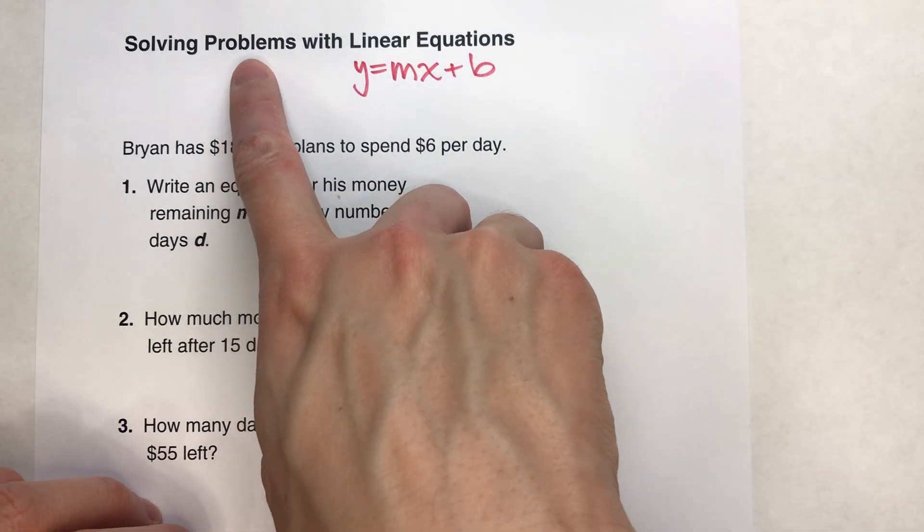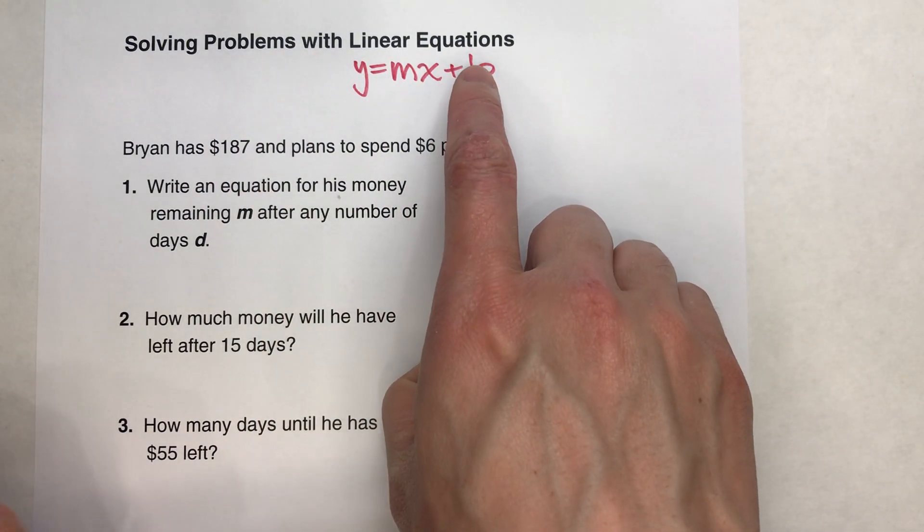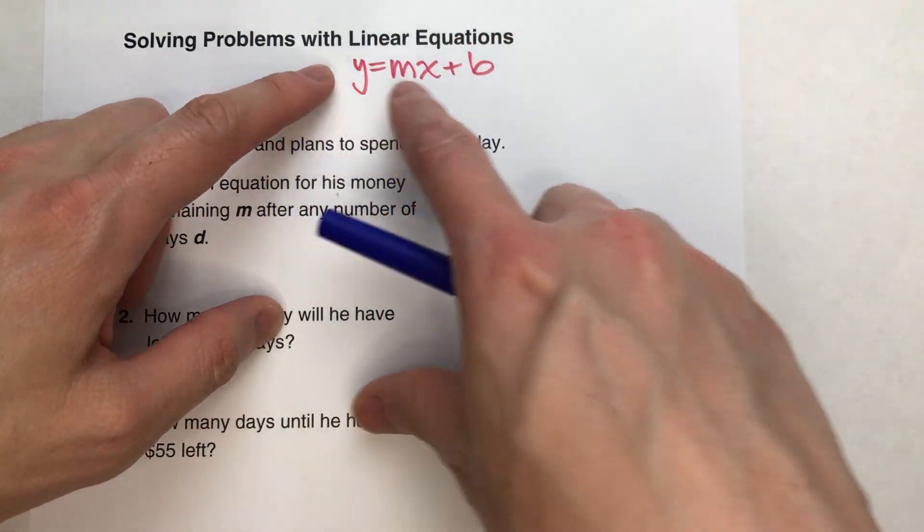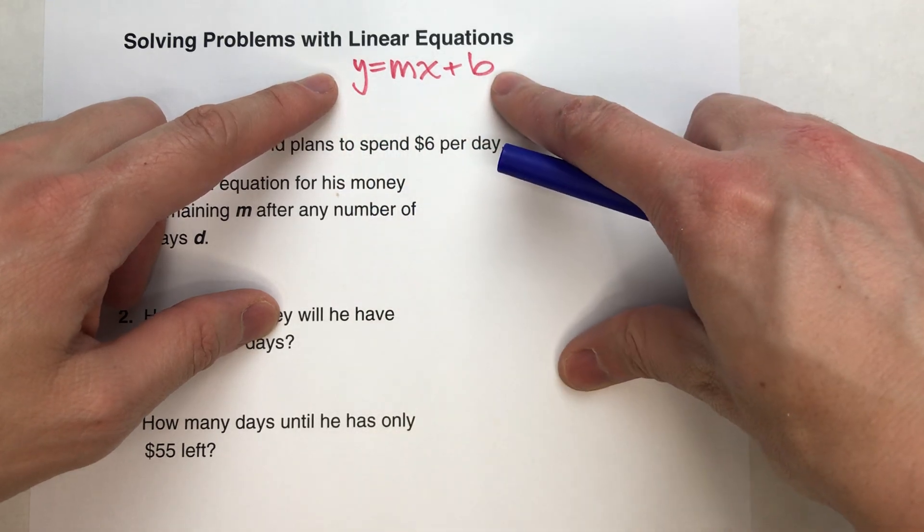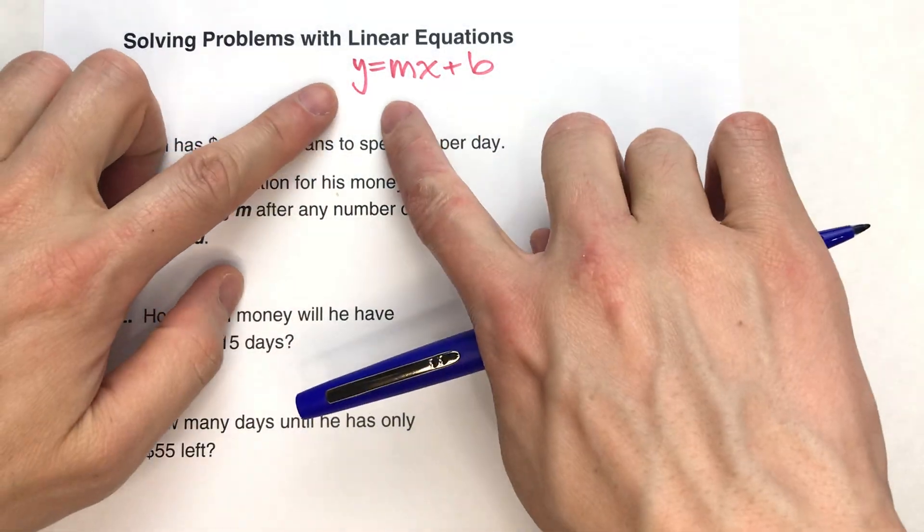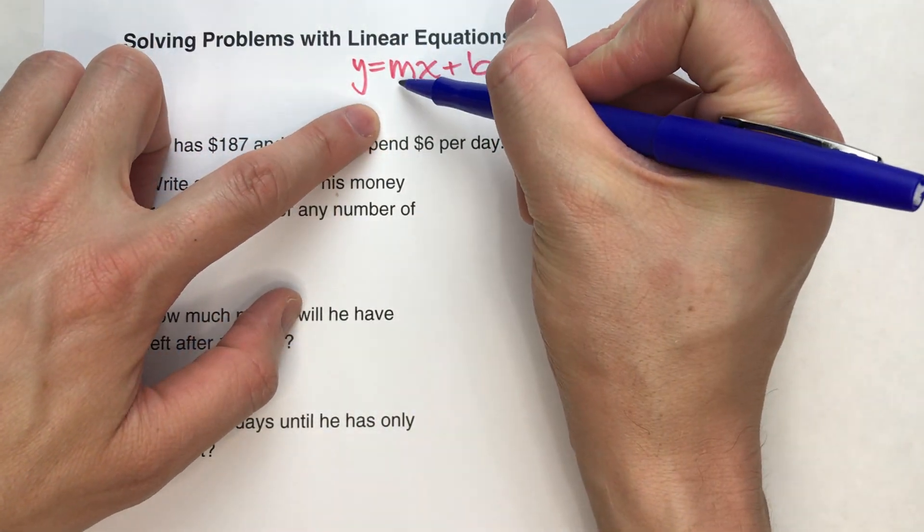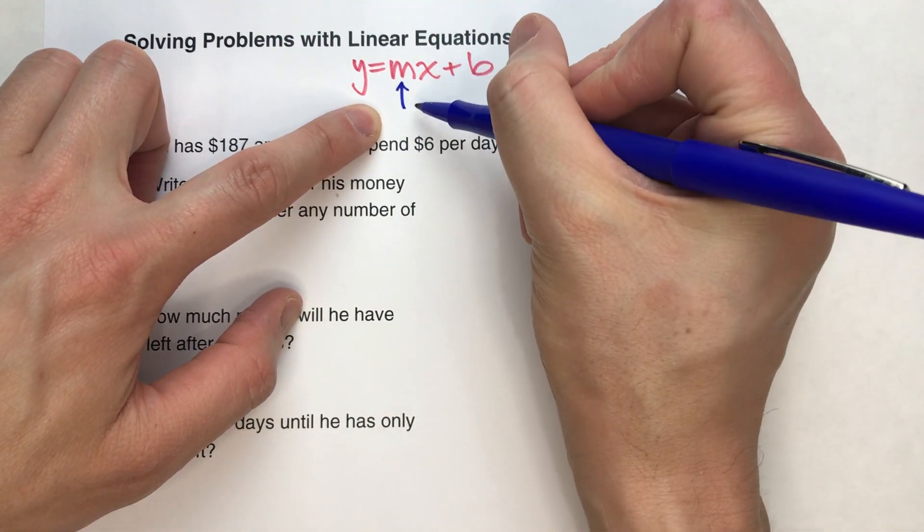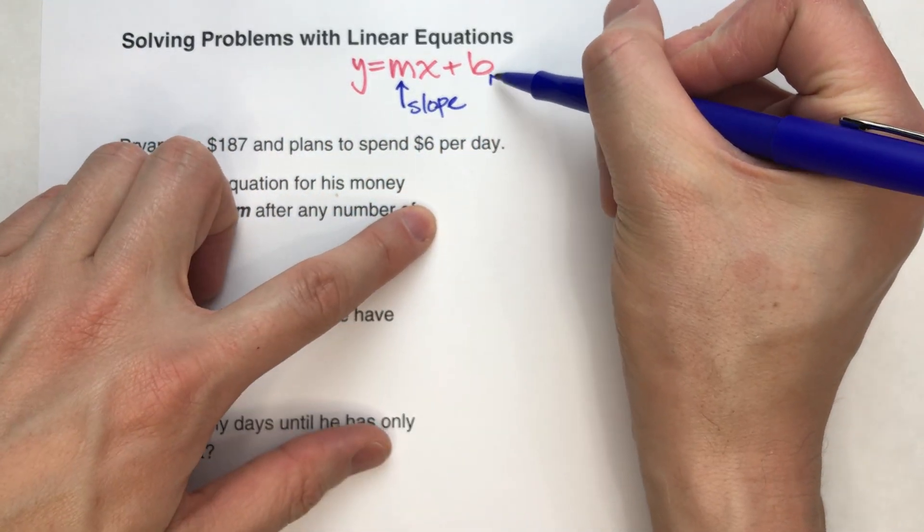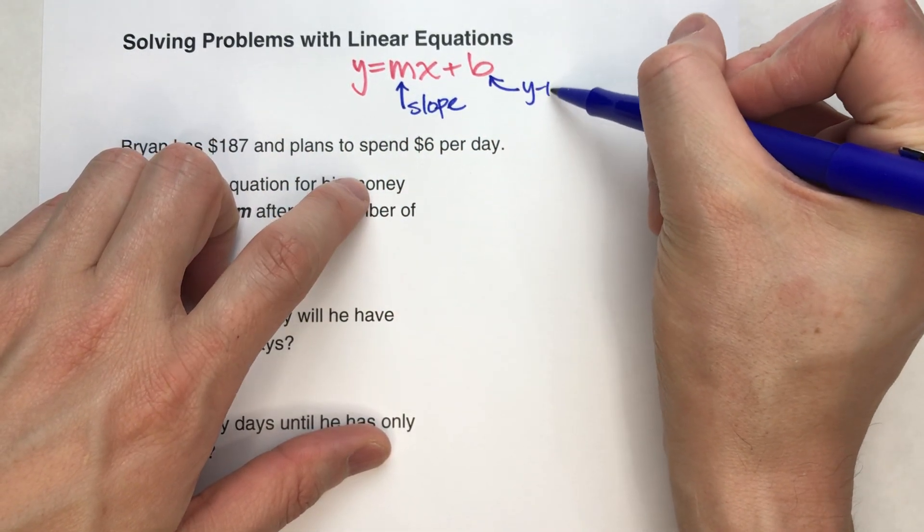So today we're going to be solving problems with linear equations. A linear equation is an equation for a line, and here's the general form for a linear equation. This is slope-intercept form, and it's called slope-intercept form because the m in y equals mx plus b stands for the slope.